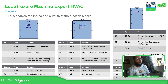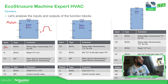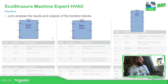Let's go inside each of these function blocks. So CTU — counter up. We have the boolean variable that gives us the signal when we want to count up. This is the reset value, so it moves the value that we have back to zero when we reach the reset. And then PV is the starting point — this is the preset value we're going to have.